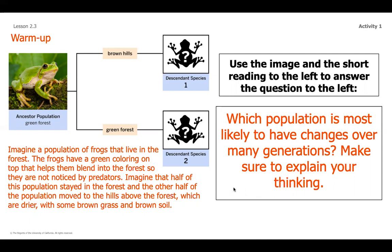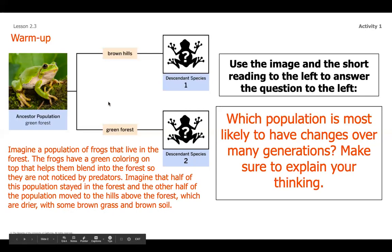I am going to read through it and then give you an opportunity to pause and answer the question in the orange writing in the box. We've got a couple of different frogs here — our descendant species and our ancestor population. The text says: imagine a population of frogs that live in the forest. Frogs have a green coloring on top that helps them blend into the forest so that they are not noticed by predators. Imagine that half of the population stayed in the forest and the other half moved to the hills above the forest, which are drier with some brown grass and brown soil. In this image, you can see those two different descendant species — the population that went to the hills and the population that went to the forest.